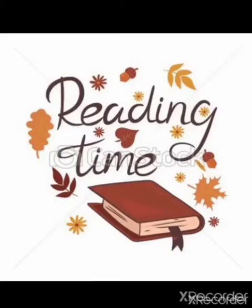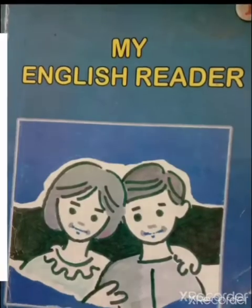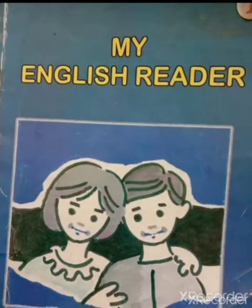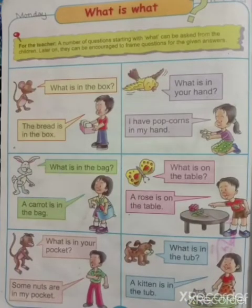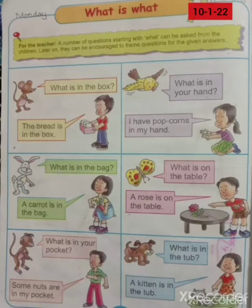Good morning children. It's reading time. Open your English reader book, page number 82. Write down day and date on the top of this page. Now let's read the heading.